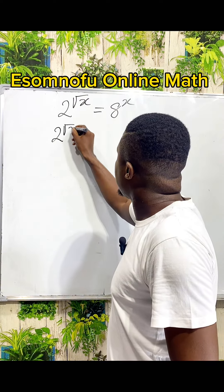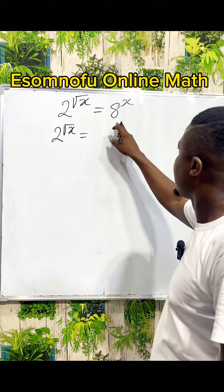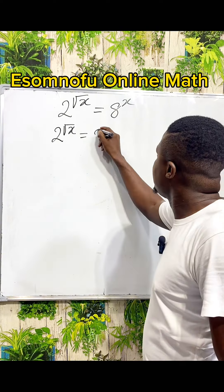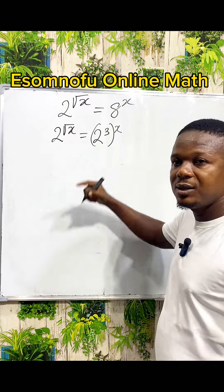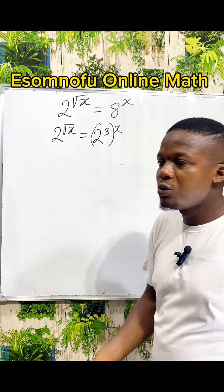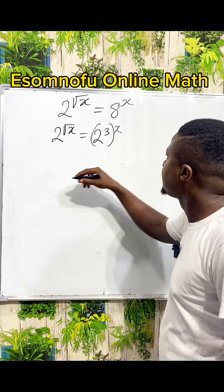This is 2 to the power of root x equals 8. Now, 8 can be broken down into 2 power 3, then you have your x. Because 2 power 3 means 2 times 2 times 2, which will give us 8.